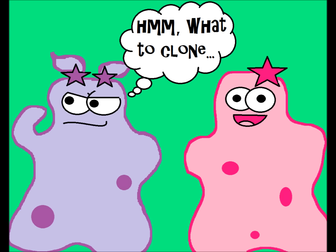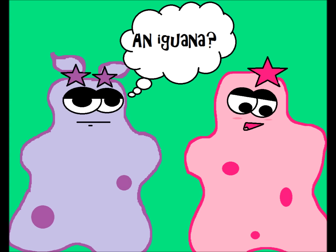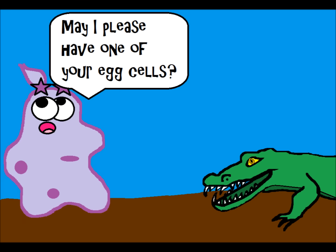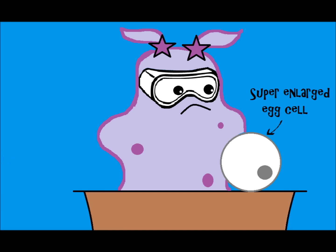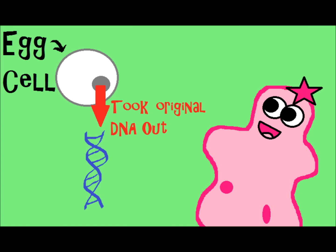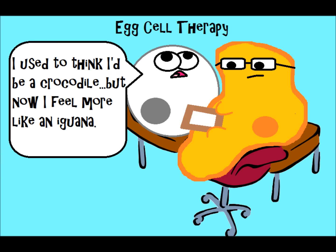Say, for example, you wanted to clone an iguana — I don't know why I picked iguana, I just like the name. Well, if you wanted to clone an iguana, you would need a reptile egg cell and you would need to take the DNA out of that egg cell, making it kind of like an empty slate. Then you would put the DNA of the iguana into that egg cell. That egg cell is now basically programmed to develop into that iguana. It would need to be implanted somewhere so that it can develop.